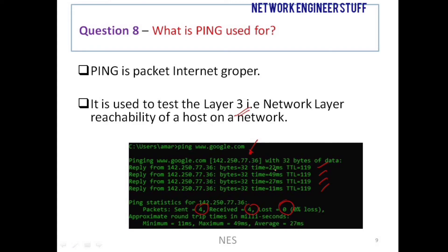Along with reachability, ping also gives latency information. In the example shown, the average latency to reach the destination is 27 milliseconds, the minimum was 11 milliseconds for one packet, and the maximum was 49 milliseconds. So ping gives you both reachability status and latency information, making it a very useful tool for network engineers.